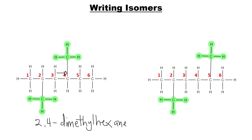Next, shift the methyl group again from the fourth carbon to the fifth carbon. This gives us another isomer: 2,5-dimethylhexane.